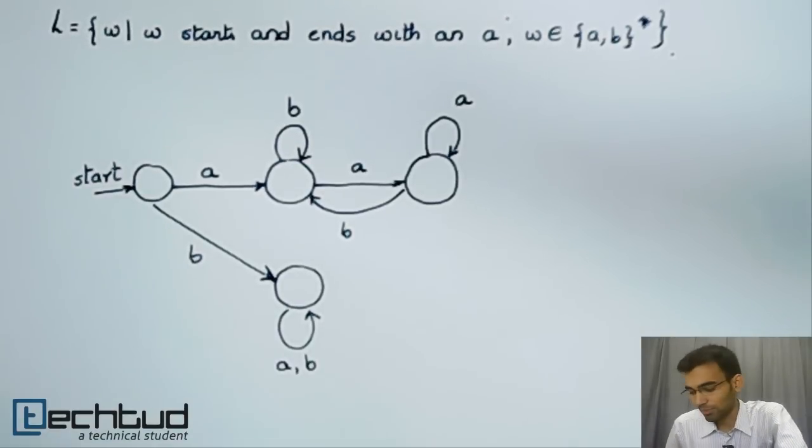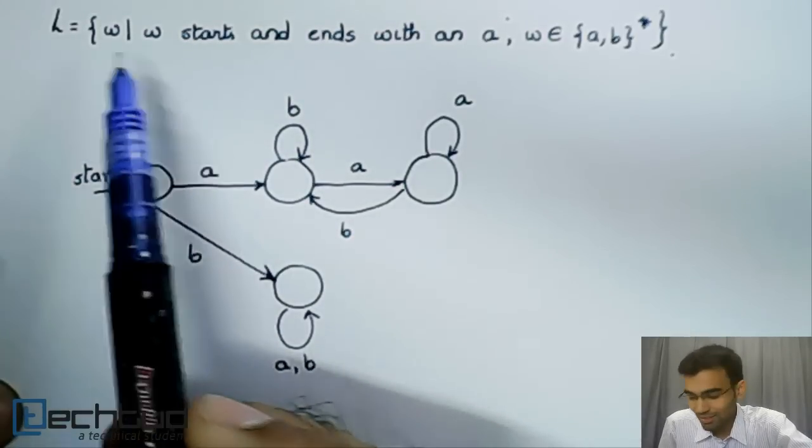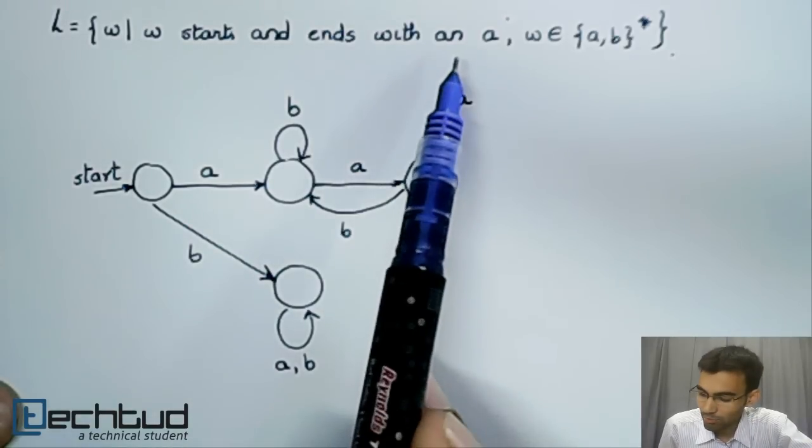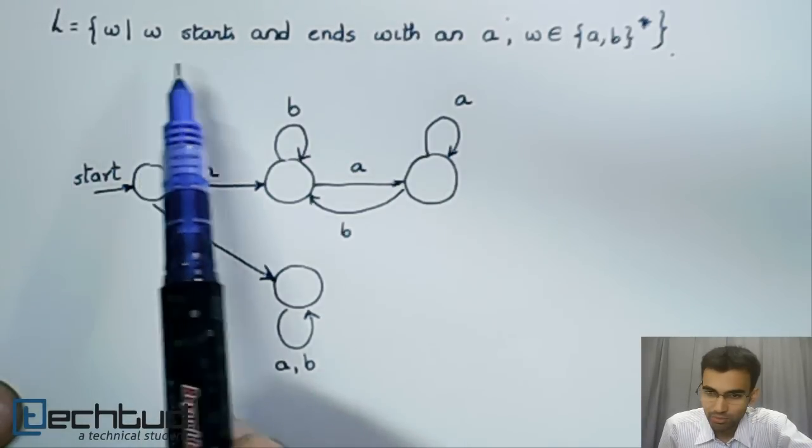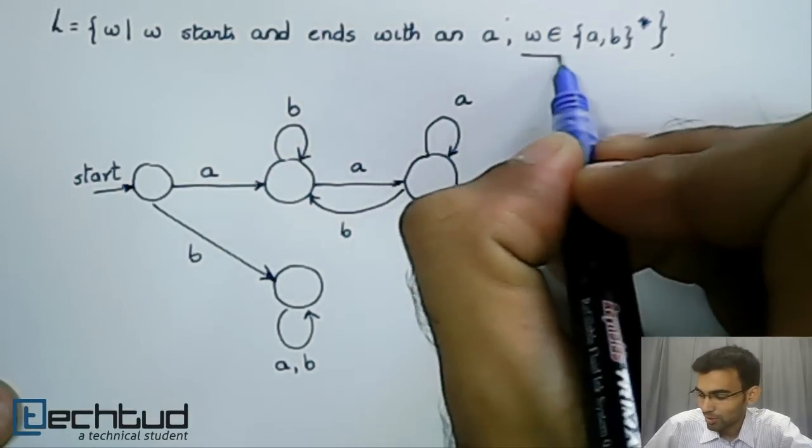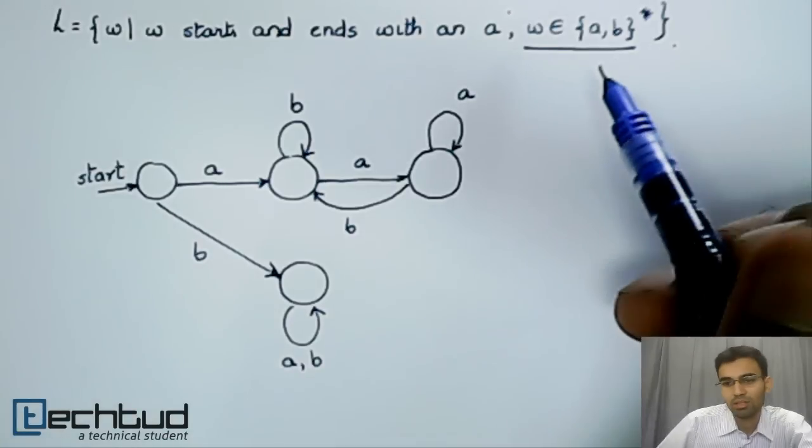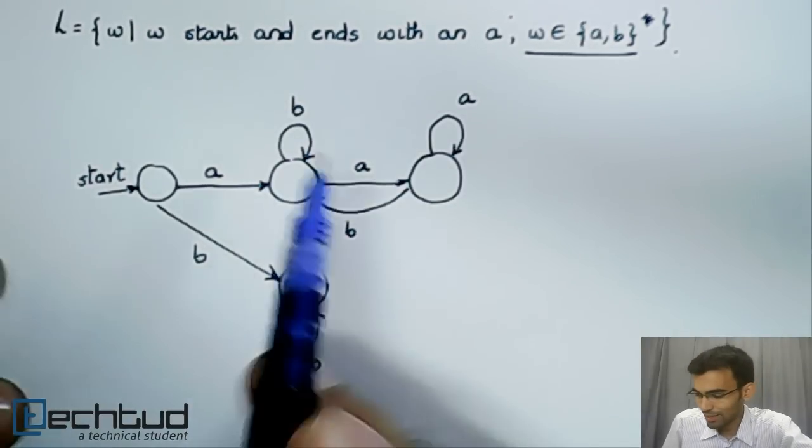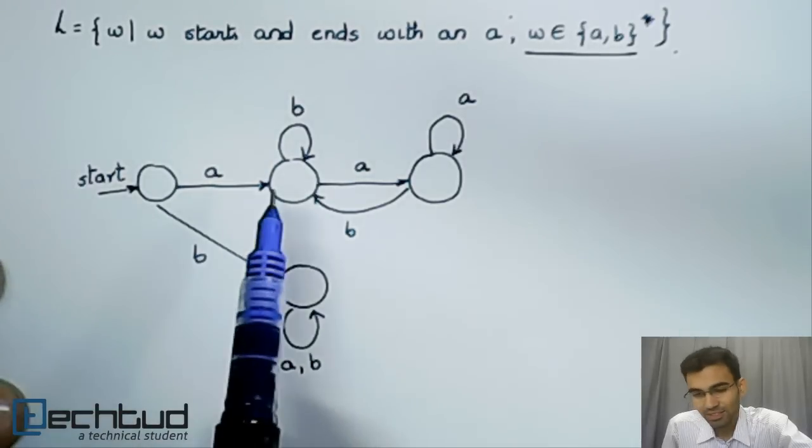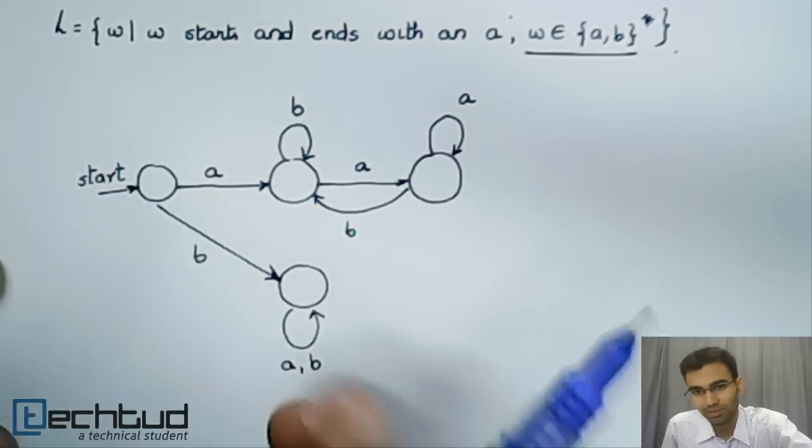Alright, so let's look at an actual example. Let's look at a language which is regular: the set of strings W such that W starts and ends with an A, and W is a word from the language consisting of A's and B's. Since W starts and ends with an A, you have at least 2 as the minimum length of the string because it has to start and end with an A. It can't be empty.